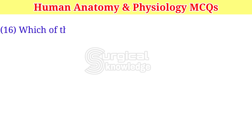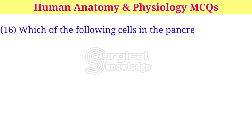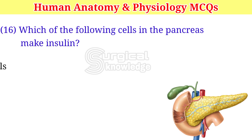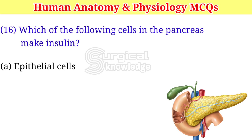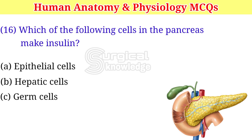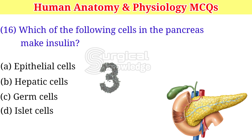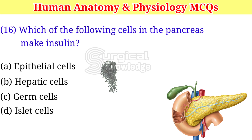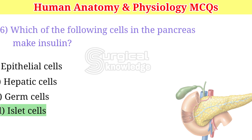Which of the following cells in the pancreas make insulin? A. Epithelial cells. B. Hepatic cells. C. Germ cells. D. Islet cells. Right answer is islet cells.